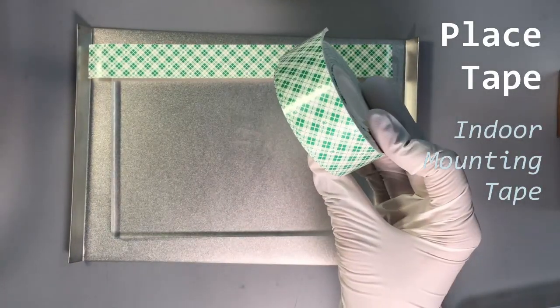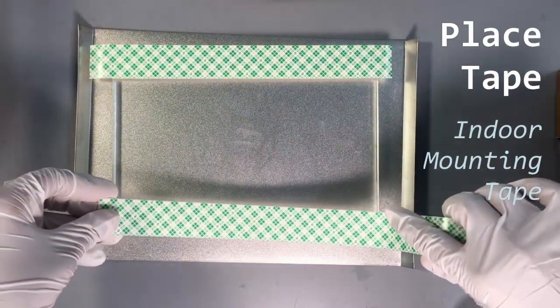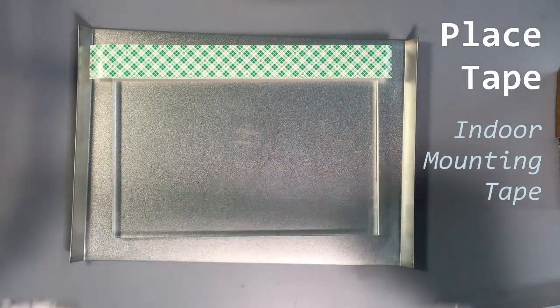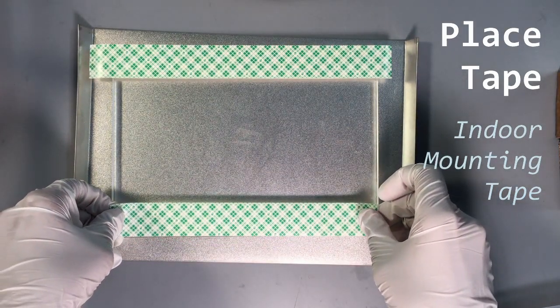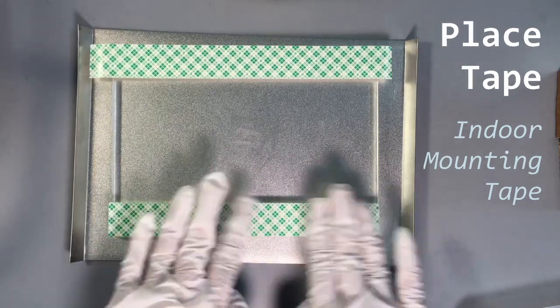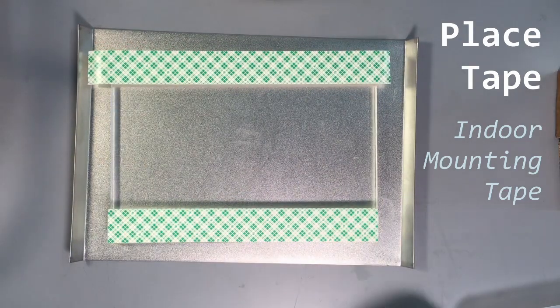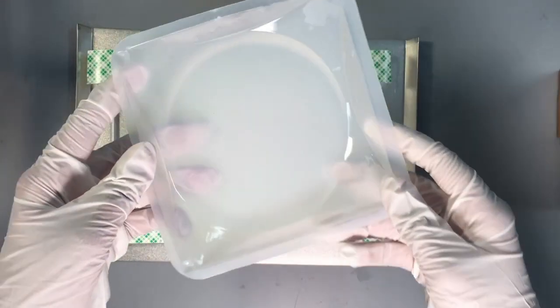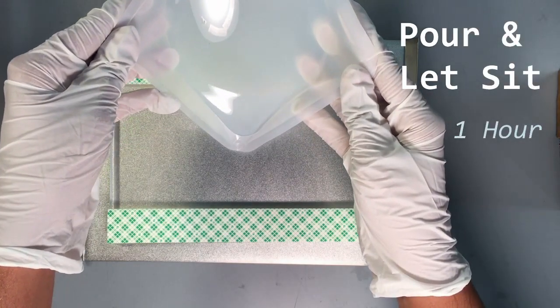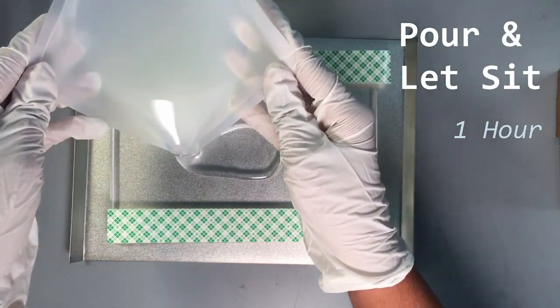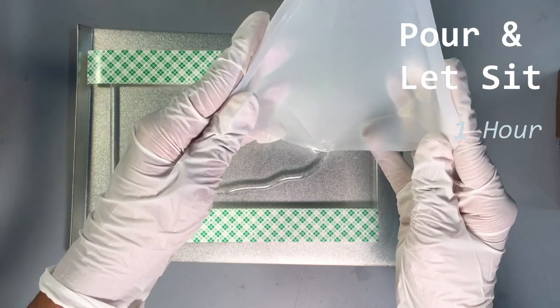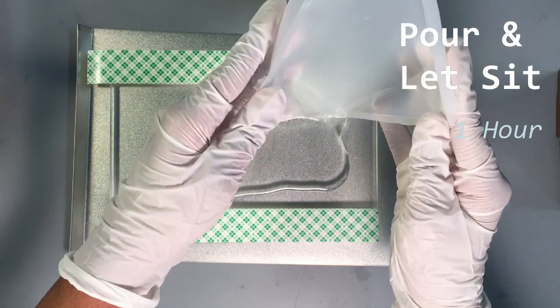Prepare your glass plate by cutting two pieces of indoor mounting tape and pasting them along the widest part of your glass plate. Ensure the plate is resting in a flat position and pour the elastomer mix onto the glass plate. If bubbles form while pouring, use a pipette tip or another sharp object to pop them.